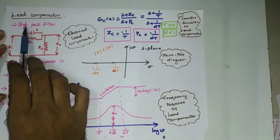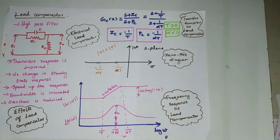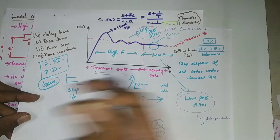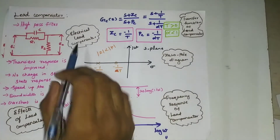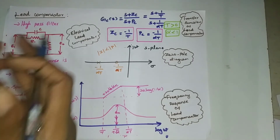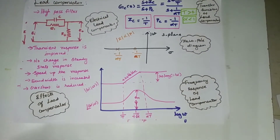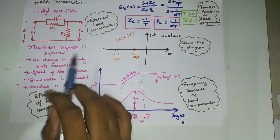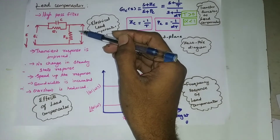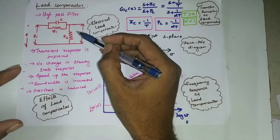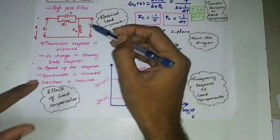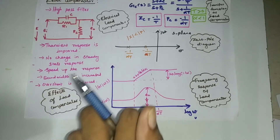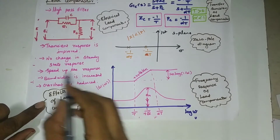Now we will see lead compensators. Lead compensators are high pass filters — they filter out all the low frequency, i.e., steady state components. This is the electrical network for the lead compensator. The effects of adding a lead compensator: first, transient response is improved; there is no change over the steady state response because this network attenuates all low frequency components and only allows high frequency components.